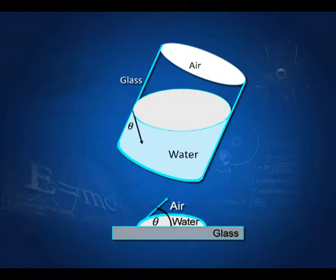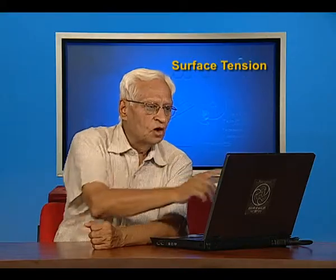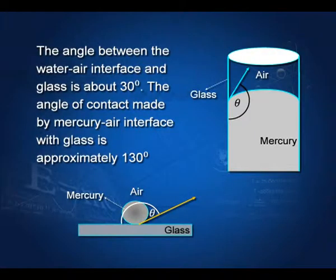Here again, there is water and there is air. If I draw a tangent to the surface, this angle is the angle of contact, measured through the liquid. The angle of contact does not depend on whether the beaker is straight or tilted. In the case of water, the angle of contact is about 30 degrees. If you take mercury, the surface curves the other way and the angle of contact measured through the liquid is about 130 degrees.